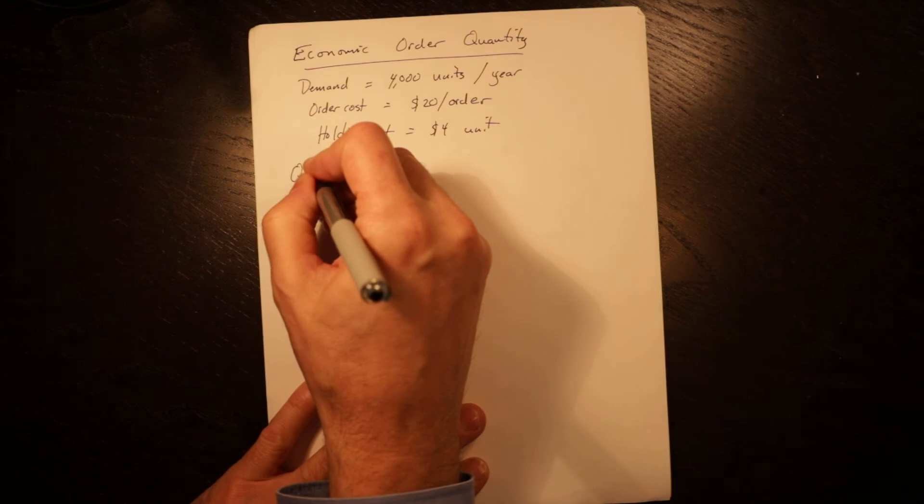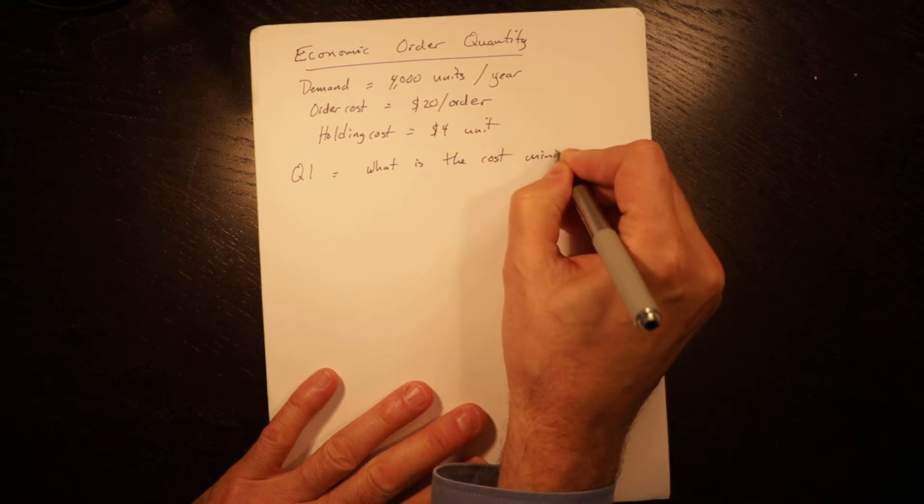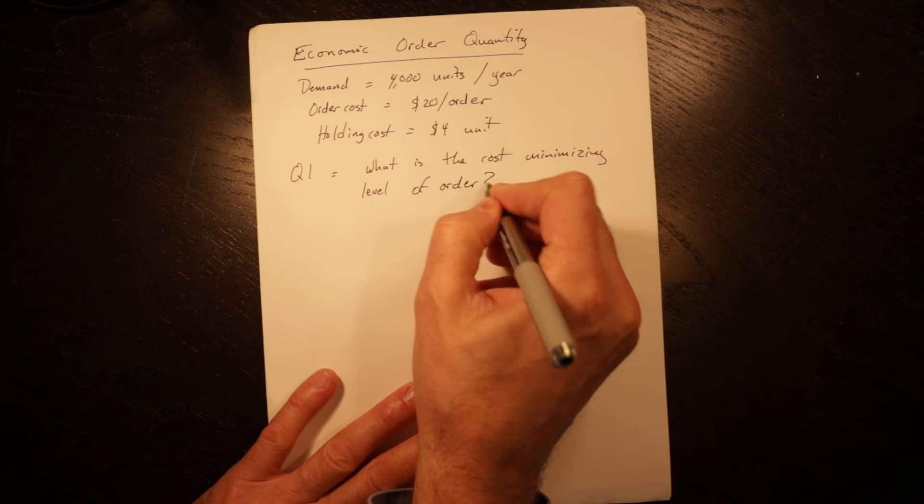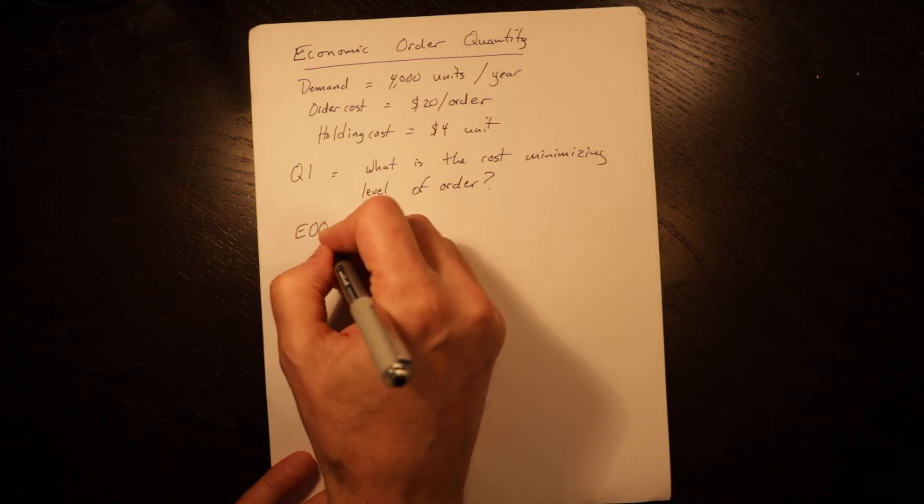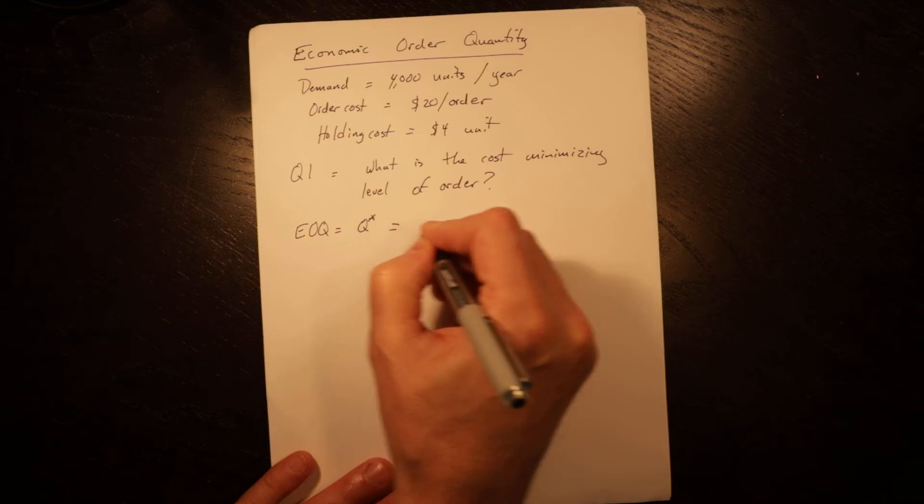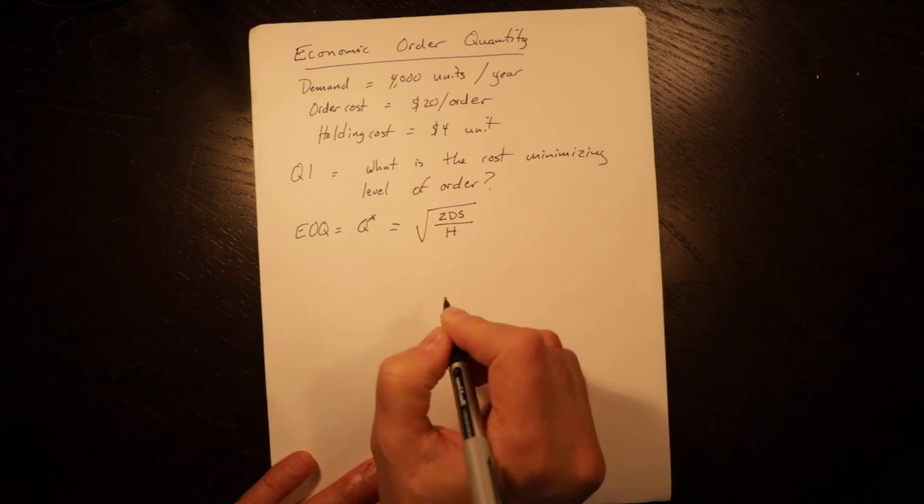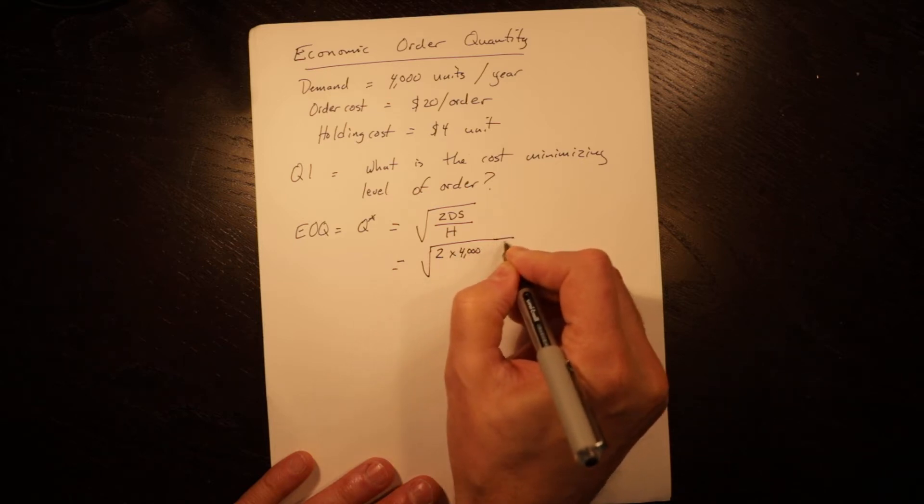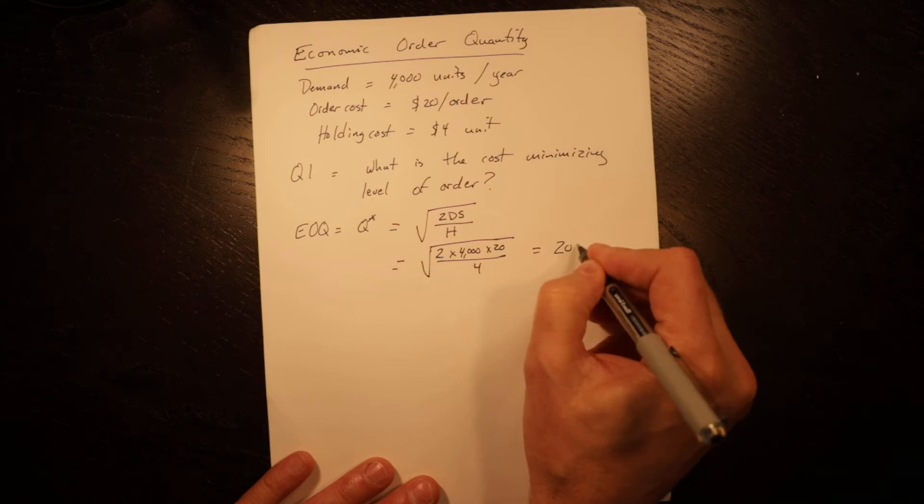The first question is what is the cost minimizing level of order, and that is essentially the EOQ. The EOQ is equal to Q* equals the square root of 2 times demand times the setup cost divided by holding cost. In this case it equals the square root of 2 times 4,000 times 20 divided by 4, which equals 200 units.